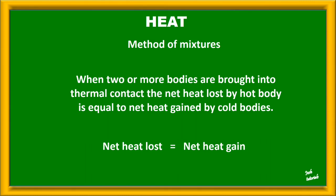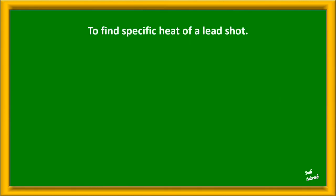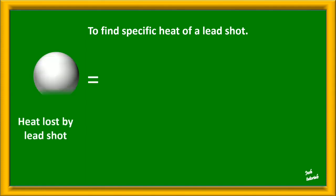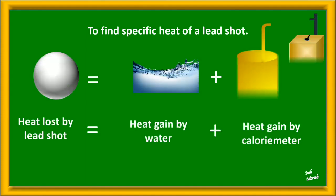We are using a calorimeter to find the specific heat of lead shots. We are heating the lead shots and introducing them into the water of the calorimeter, so heat lost by the lead shots is equal to the heat gained by the water and the material of the calorimeter.